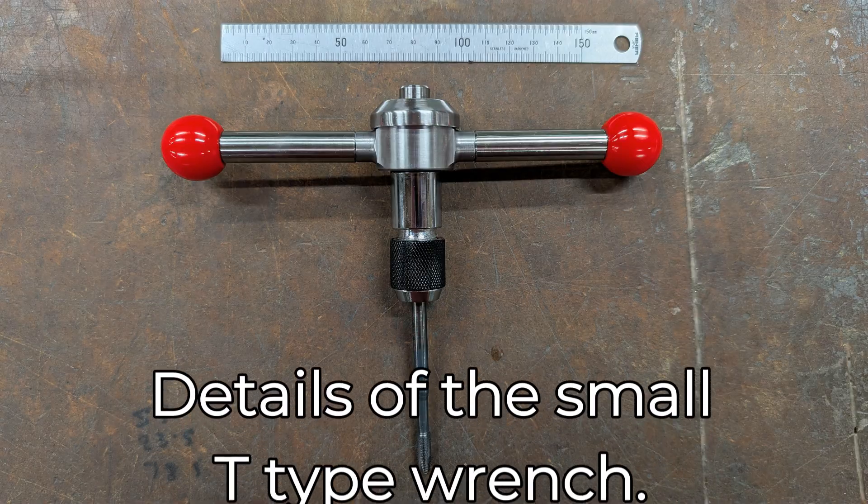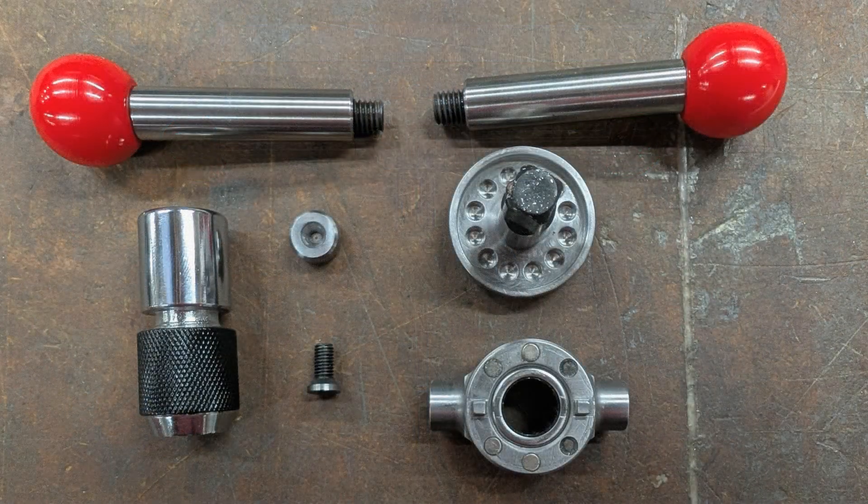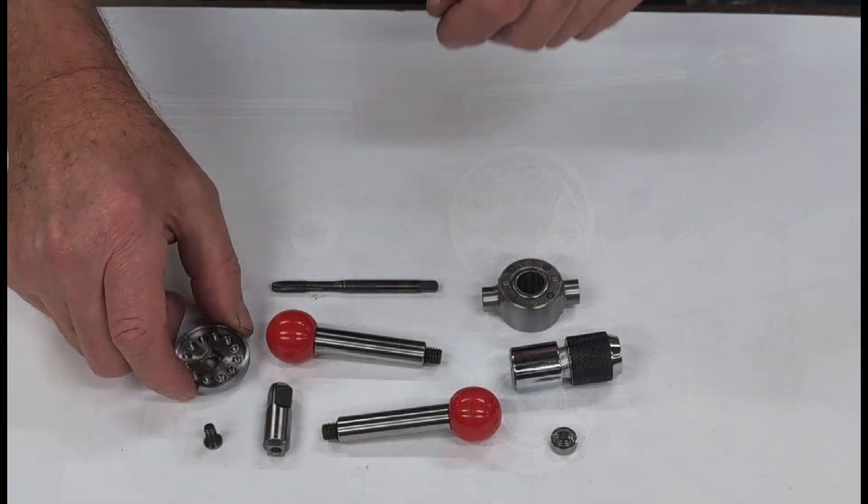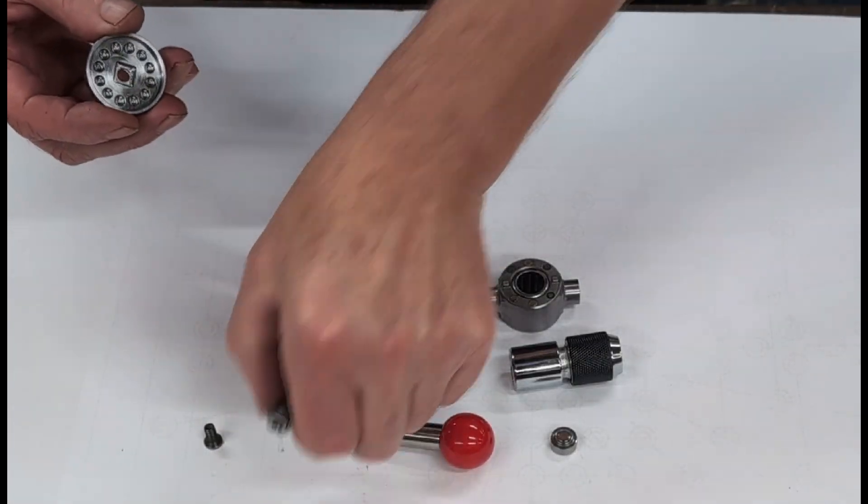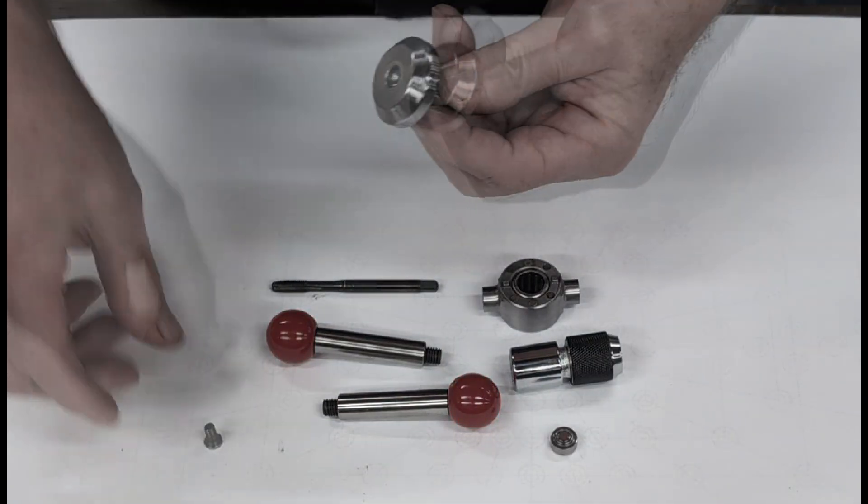For the T-Type wrench, I've modified a standard 3.8 drive extension. It locates into a square recess in the fixed drive cap and is held in place with an M5 screw. The assembled body slides over the drive pin and locates neatly in the bore of the sprag clutch.